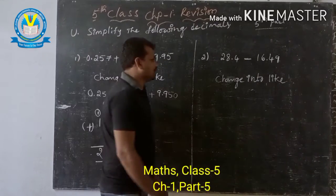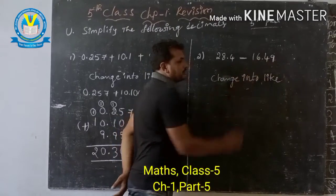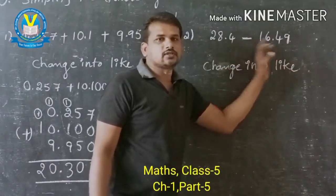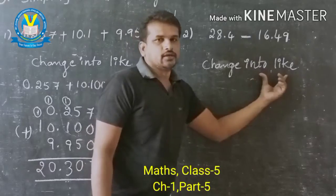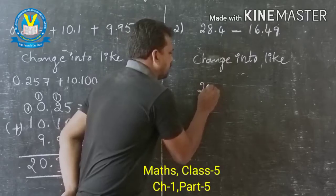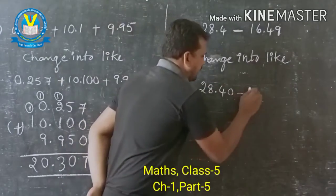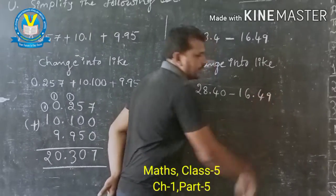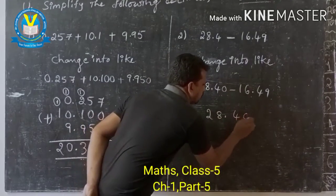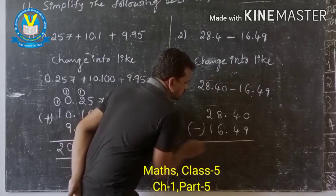Now the second one: 28.4 minus 16.49. Here point after only one place, here point after two places — this is unlike decimals. So change into like decimals: 28.40 minus 16.49.